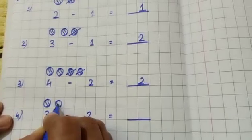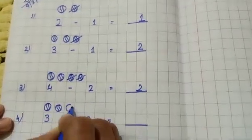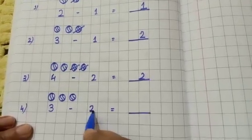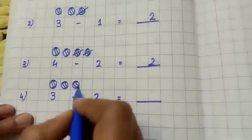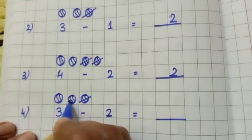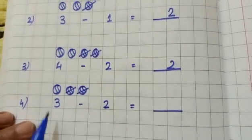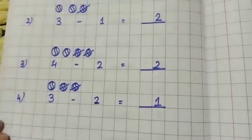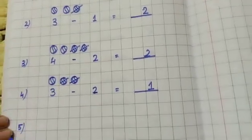One, two, three. So how many I will remove? Two. One, two. So how many left? One. So here I will write one, okay.